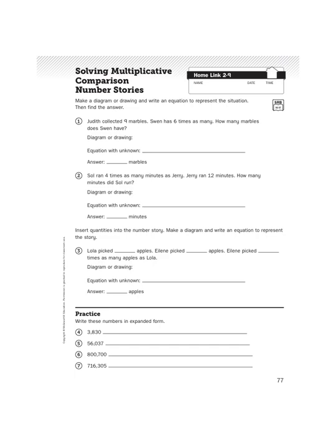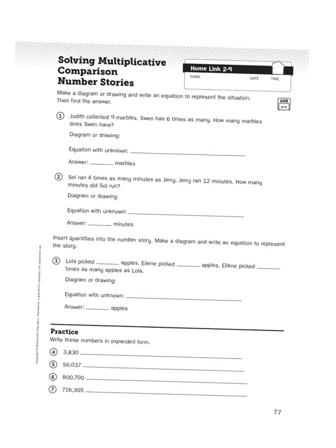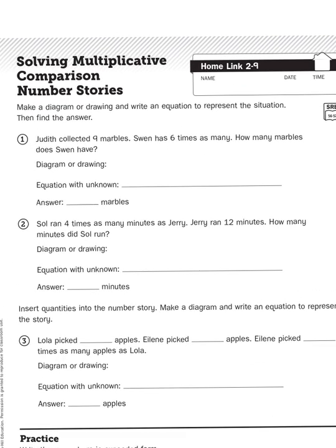So let's take a look at the instructions for number one. It says make a diagram or drawing and write an equation to represent the situation, then find the answer. The situation for problem number one is: Judith collected nine marbles. Swen has six times as many. How many marbles does Swen have?